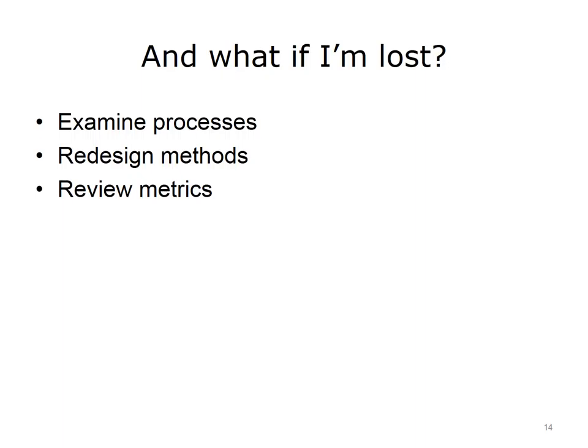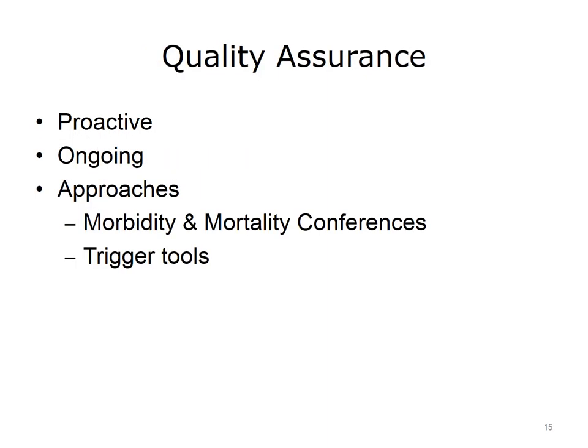Finally, if the goals and methods seem appropriate but the metrics did not indicate improvement, the metrics themselves and how they were calculated need to be reviewed to assure that results are accurate. In addition to retrospective review to identify quality problems and work to improve them, proactive ongoing monitoring should be done. This may involve periodic review of dashboards, morbidity and mortality conferences to examine the causes of adverse events, and the use of trigger tools, which can identify data that may signal a problem requiring further investigation.